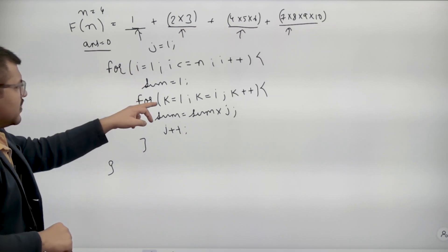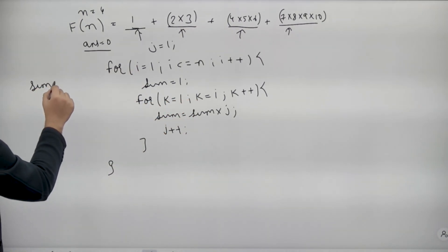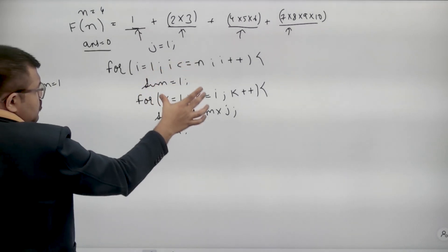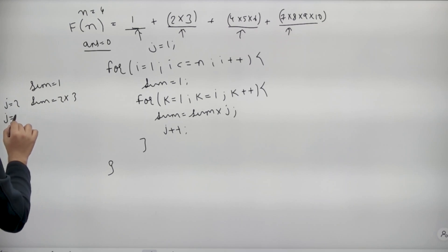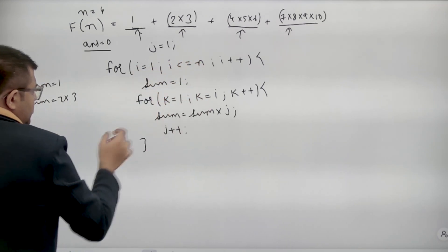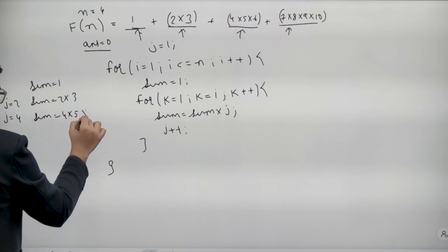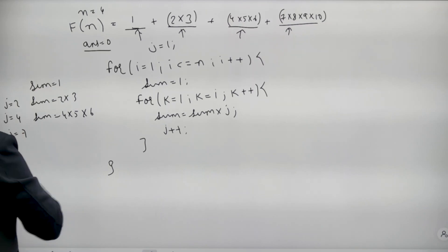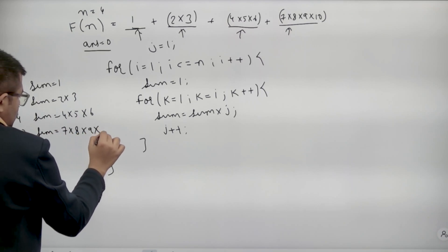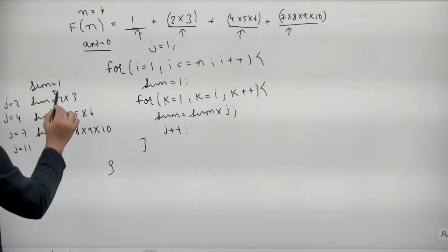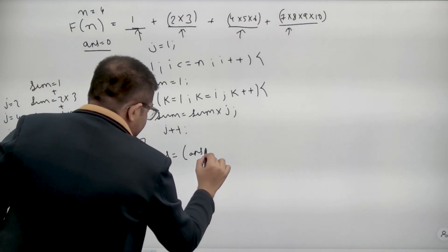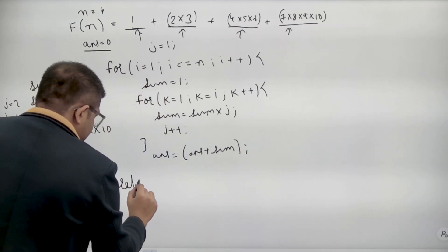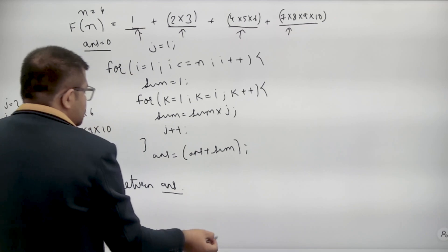So when i will be equal to 1, this loop will run 1 time and my sum will be 1 and j will become 2. Then when my i will be 2, this loop will run 2 times and sum will contain 2 into 3 and j will become 4. Then when i will be equal to 3, this loop will run 3 times. It will calculate 4 into 5 into 6 and my j will become 7. Then when i will be equal to 4, this loop will run 4 times. So it will be sum equals to 7 into 8 into 9 into 10 and my j will become 11. And individually I will add these terms so that I get the required answer. So I can say answer equals to answer plus sum. And finally, I will return my answer. That is all. This is how we can solve this question.